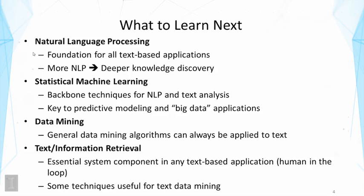Text retrieval also provides a way to annotate and explain patterns — this has to do with knowledge provenance. Once we discover knowledge, we need to verify it by going back to the original text, and that's when a search engine is very important. Moreover, information retrieval techniques such as BM25, vector space models, and language models are very useful for text data mining. Indexing techniques that enable quick search engine responses are also very useful for building efficient text mining systems.